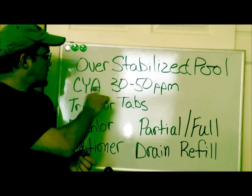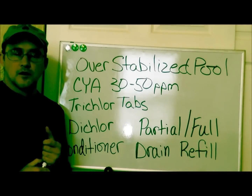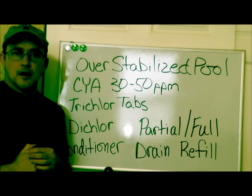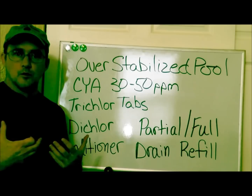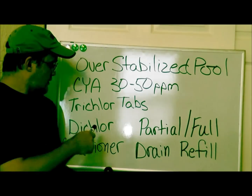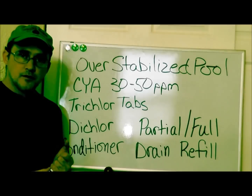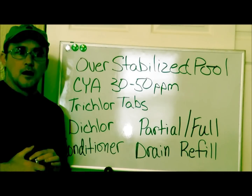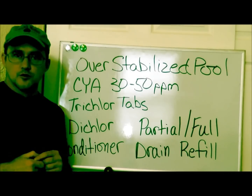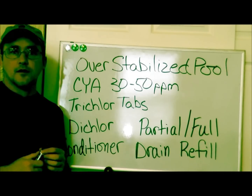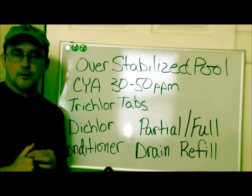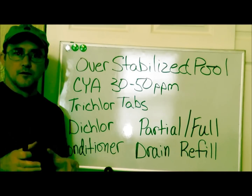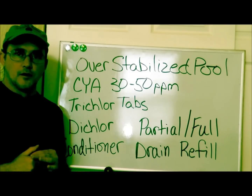The range for cyanuric acid is 30 to 50 parts per million. As you use the pool and add trichlor tabs, which have cyanuric acid in them, it'll slowly start to dose your pool with cyanuric acid or stabilizer. Never put them in the skimmer — always put them in a float, throw them in the pool and you'll be okay.